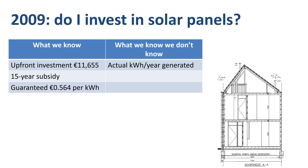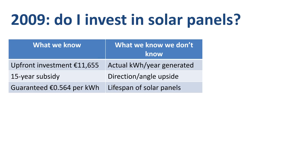My first reason to be optimistic was the structure of my house. The solar panels would be installed on the roof with nearly perfect conditions — facing due south, at a 37-degree angle — so hopefully there would be some upside in the number of kWh generated per year. Additionally, a 15-year lifespan sounded short to me, and every extra year of operation would add positive returns.